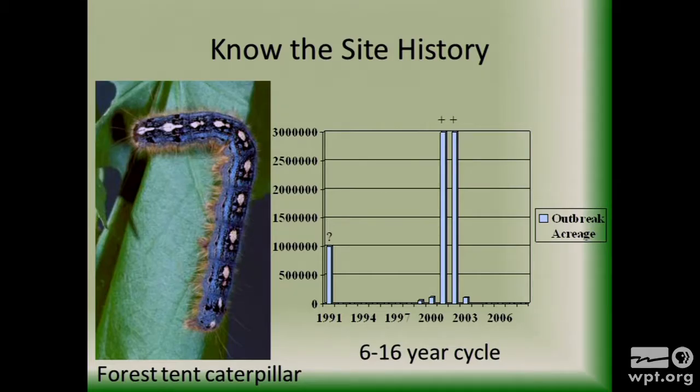Knowing if there have been big infestations in the past is also important. This is the forest tent caterpillar — it has a distinctive pattern on its back that some people say looks like footprints or keyholes. It's a native species that's common in our forests. But every 6 to 16 years their populations just explode, and you can see in the graph that in the early 2000s there was a really big population boom — so we're kind of due for another one soon. What happens is they get this big population boom, and then all the predators out there munch them up and their population crashes again.